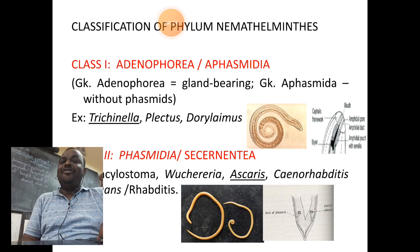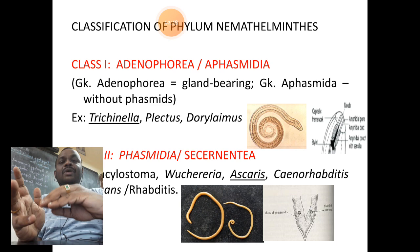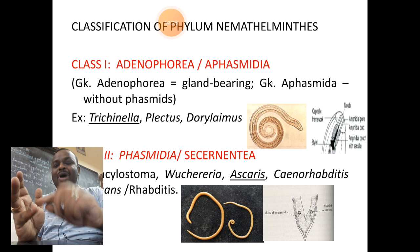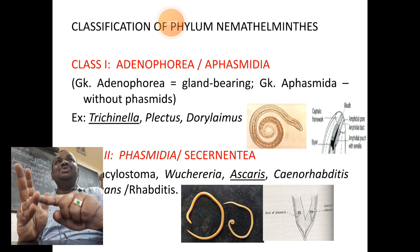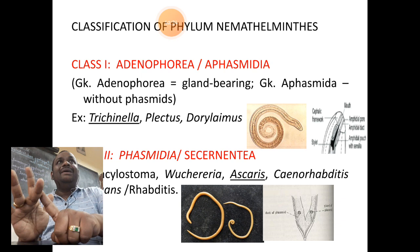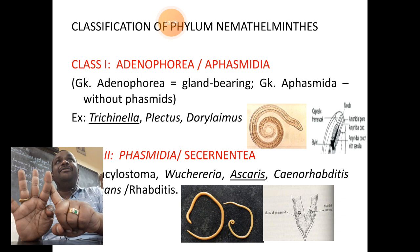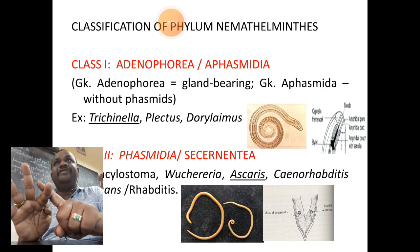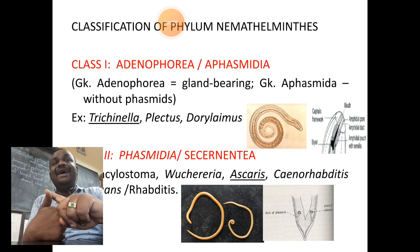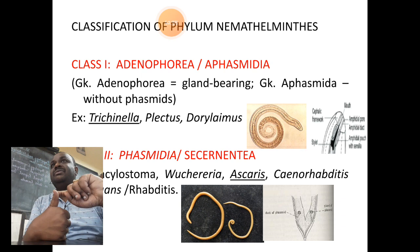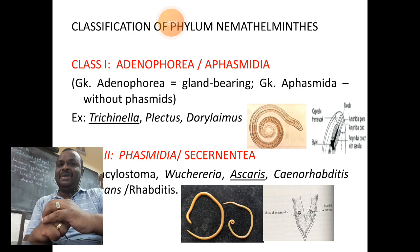Special characters to remember about nematodes: (1) they are pseudocoelomates; (2) they have syncytial epidermis with a cuticle outside; (3) they have a muscular pharynx; (4) they have a circumfaryngeal nerve ring surrounding the pharynx, from which arise dorsal and ventral nerve cords; (5) sexes are separate and show sexual dimorphism — males and females can be differentiated externally.